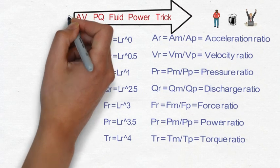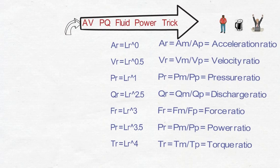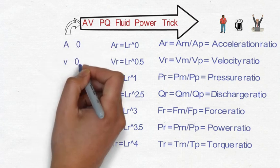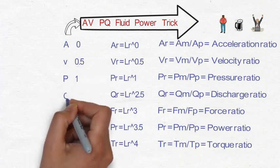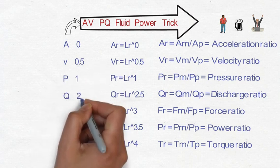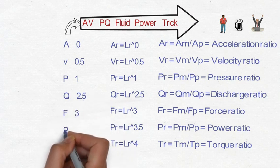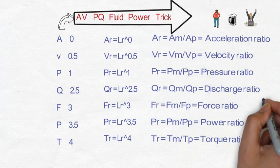Only in the case of pressure and discharge, the increment of 1.5 occurs. So we have to remember these powers, and all are in sequence. A has power 0, V has power 0.5, pressure has power 1, Q has 2.5, force 3, power ratio 3.5, and torque ratio 4. So these are the powers.